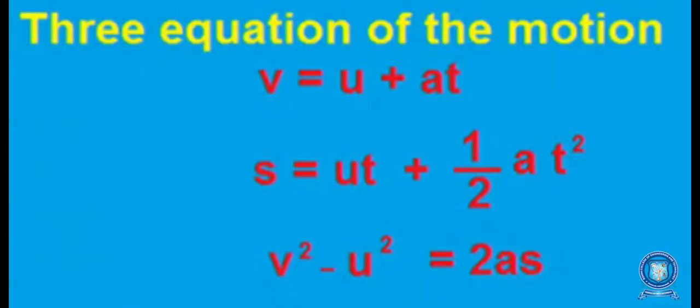These are the three equations governing the motion of a particle under constant acceleration. Equation 1: V = u + at. Equation 2: s = ut + ½at². Equation 3: v² − u² = 2as. Here, u is the initial velocity, v is the final velocity, a is the acceleration, t is the time taken, and s is the displacement. This is for constant acceleration.